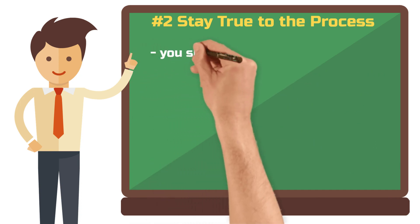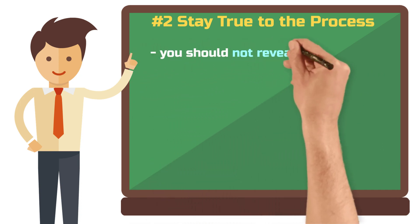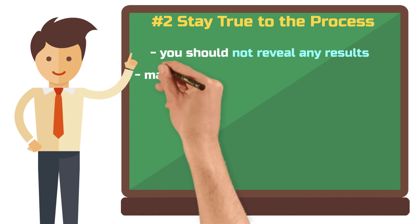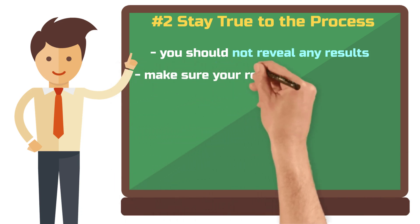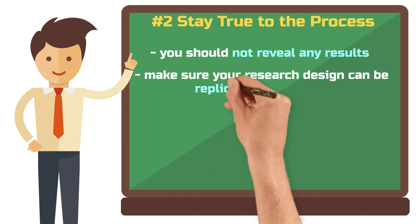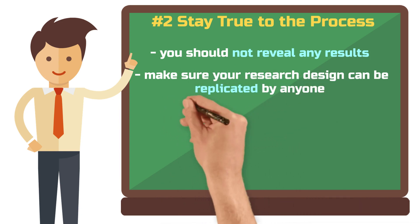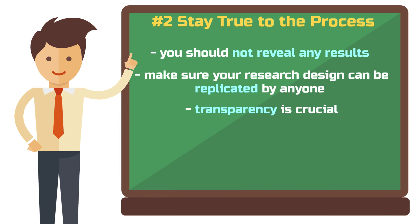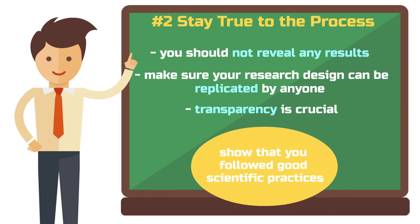You should not reveal any results at this point. The methodology section only describes your research design so that it could be replicated by anyone. Transparency is crucial. Even unexpected incidents such as a failed pretest or a revised codebook are not a problem — they contribute to adding depth to your approach and show that you have followed good scientific practices.